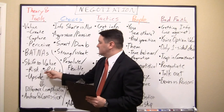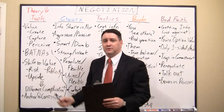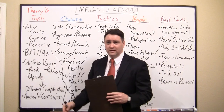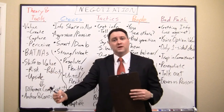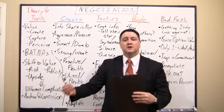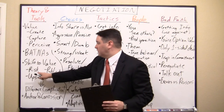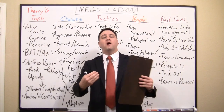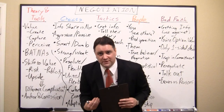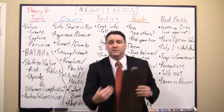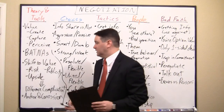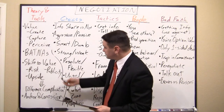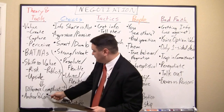Sometimes it's better to find a one-sided shift. Other times you'll need to trade. For example, if you're on the other side and you accept the risk for breakage, you should ask for something in return — something they don't value much but you do. That's the shift to value.